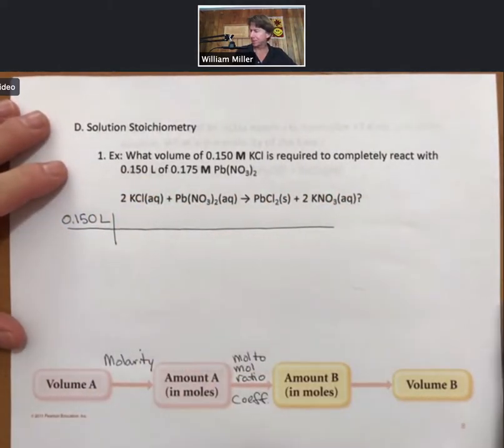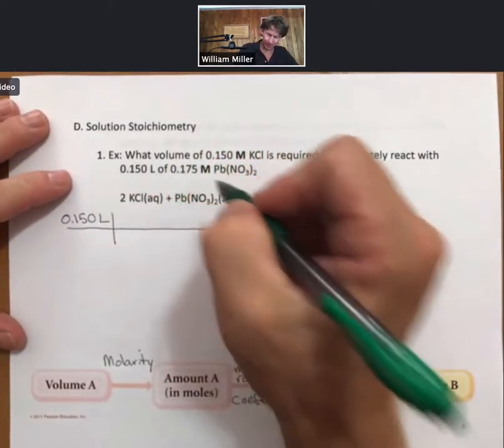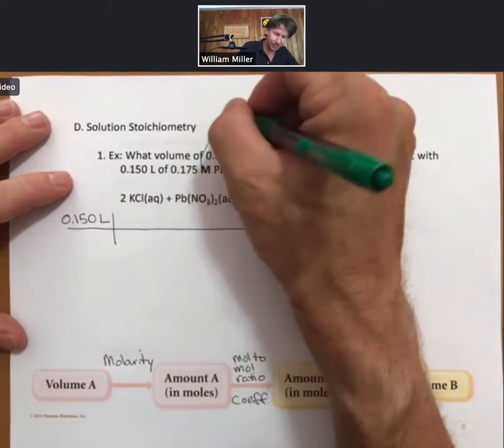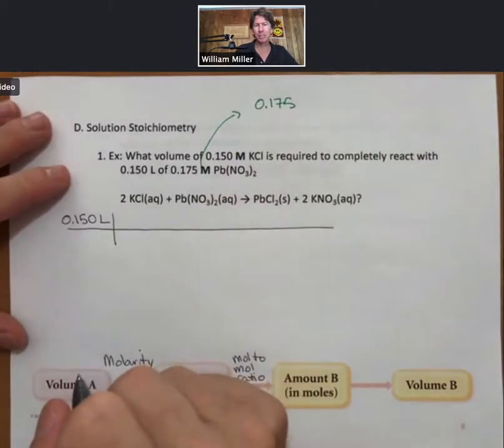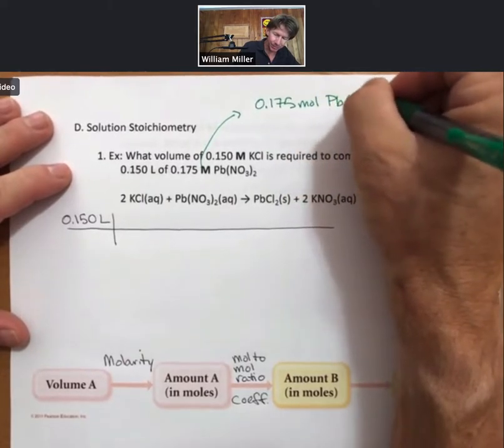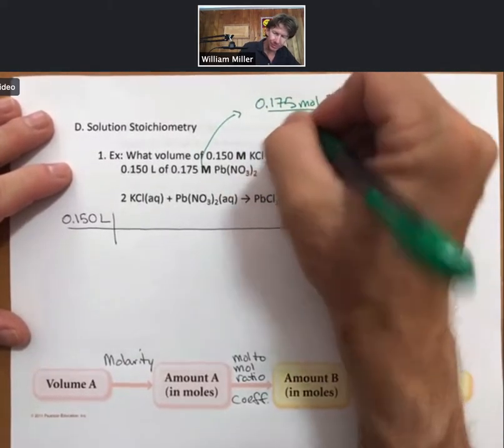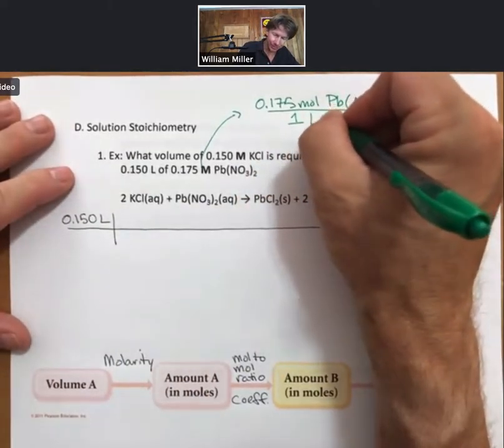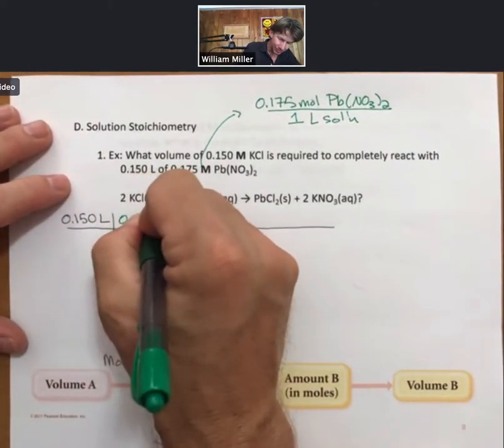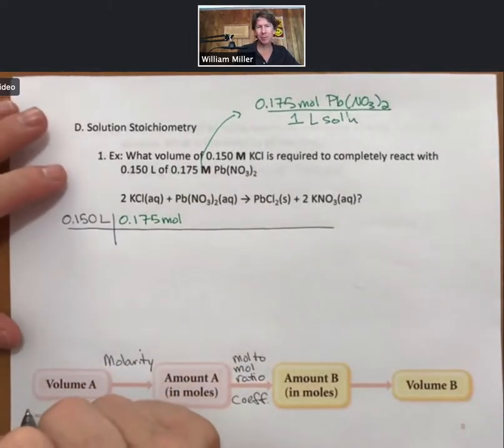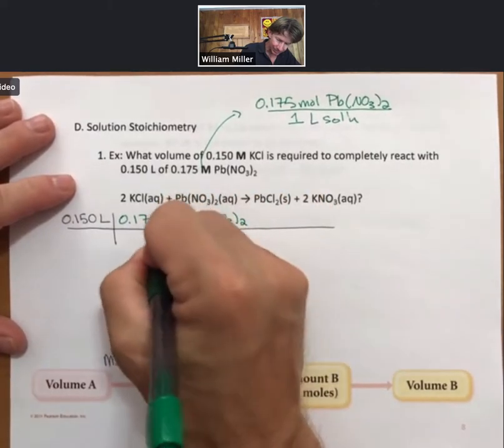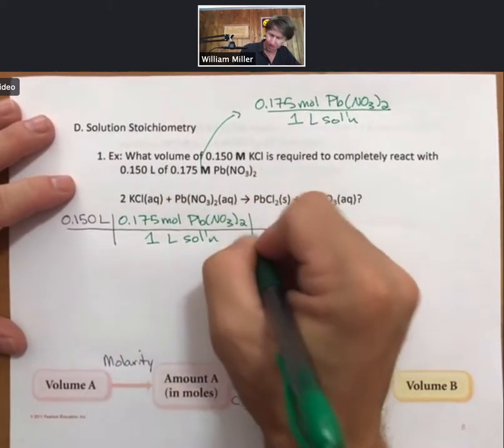And what I'll do is I'll convert for my lead-to-nitrate. Instead of molarity, I know that molarity is really 0.175 moles of lead-to-nitrate per one liter of solution. And I'll write it just like that in my picket fence.